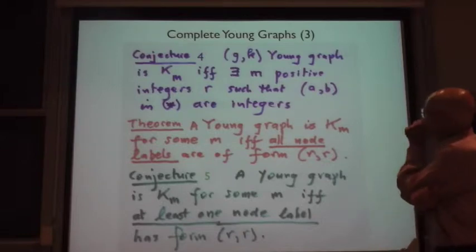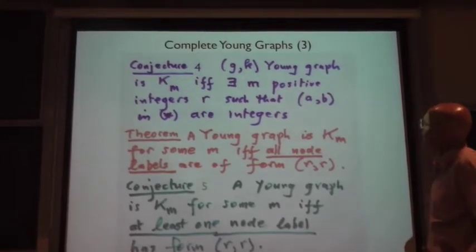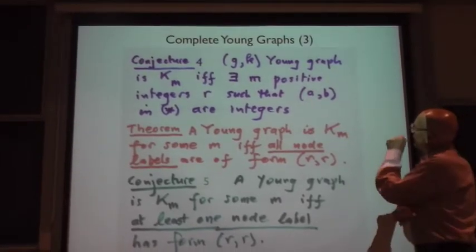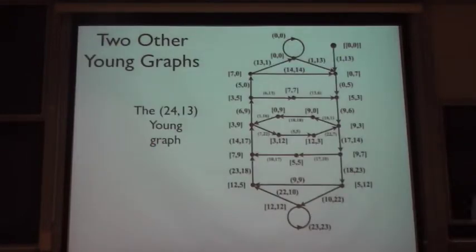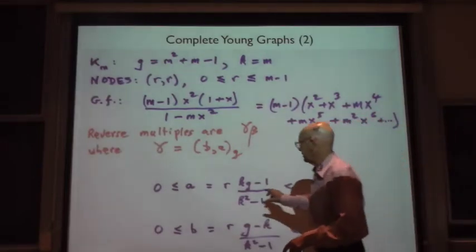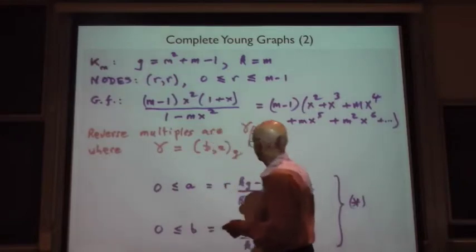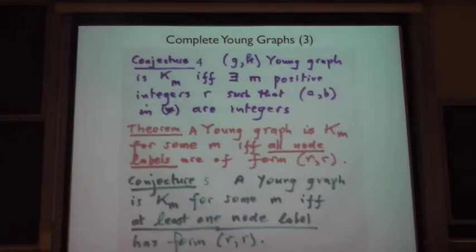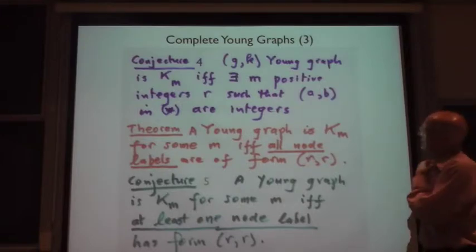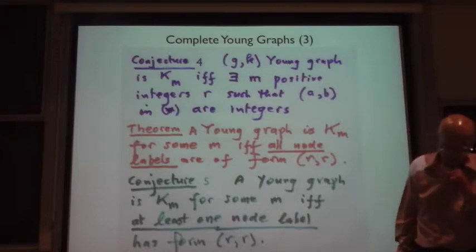So there's a conjecture that we get the complete graph on M nodes if and only if there are M solutions. We need a pair of numbers B and A that have to lie in this range. If there are M such numbers, then we get the complete graph on M nodes. So that's another conjecture. These conjectures seem really obstinate.